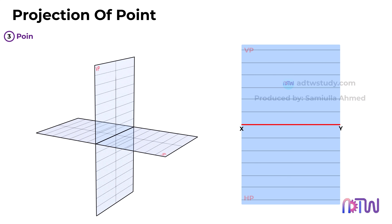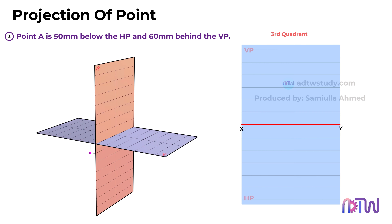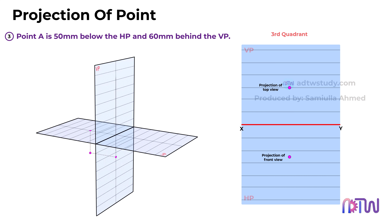Moving on, point A is now 50mm below the HP and 60mm behind the VP — this means the point is in the third quadrant. If we position the point below the HP and behind the VP, the top view will be above the xy-line and the front view will be below the xy-line. The vertical alignment is evident, with the top view 60mm above the xy-line and the front view 50mm below the xy-line.